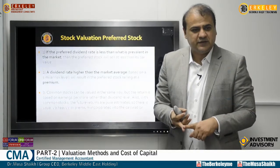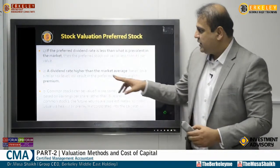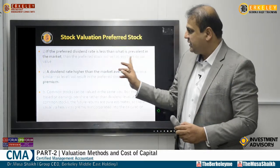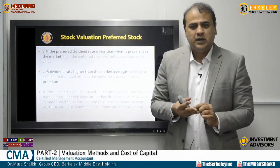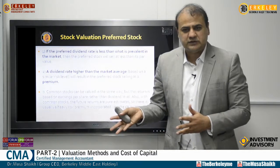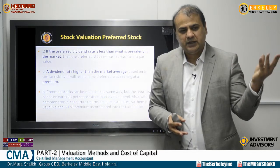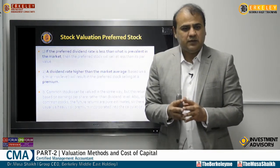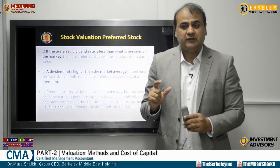In the previous lecture we discussed what is a bond, what is equity, what is a preference share, what is an ordinary share. Continuing that discussion: if the preferred dividend rate is less than what is prevalent in the market, then the preferred stock will sell at less than par value. Par value, face value, or legal value is recorded in accounting books, but market value comes from external trading.